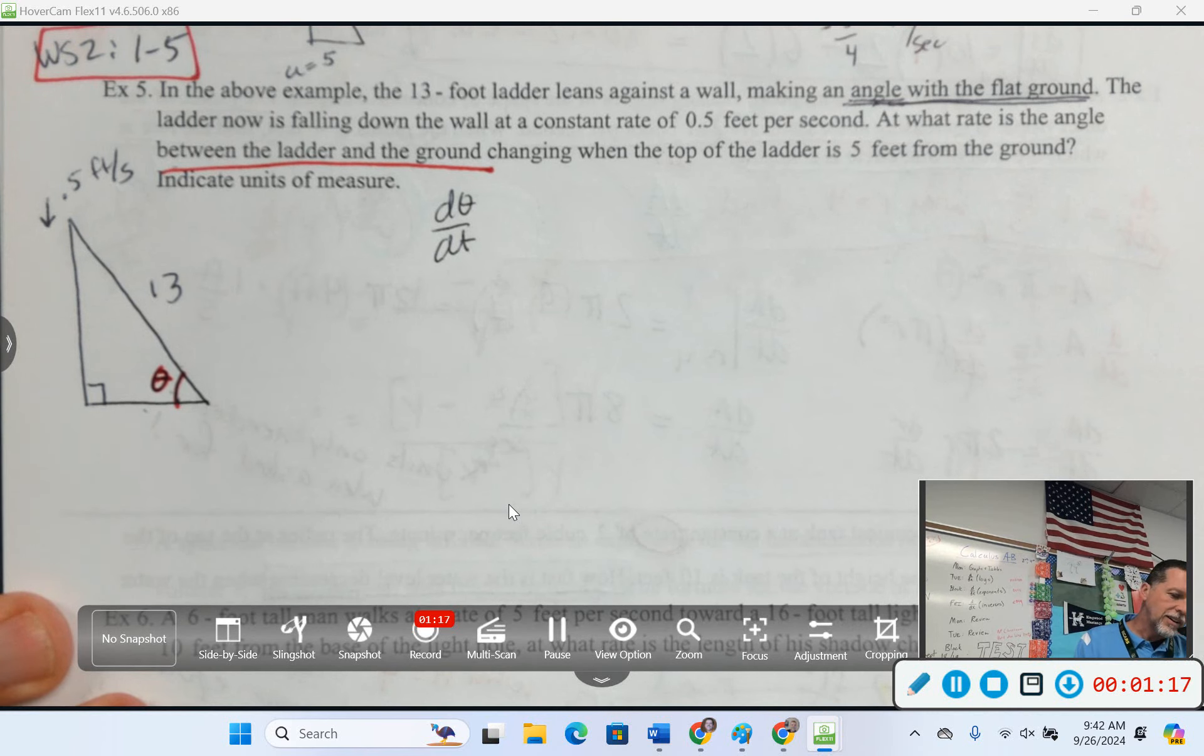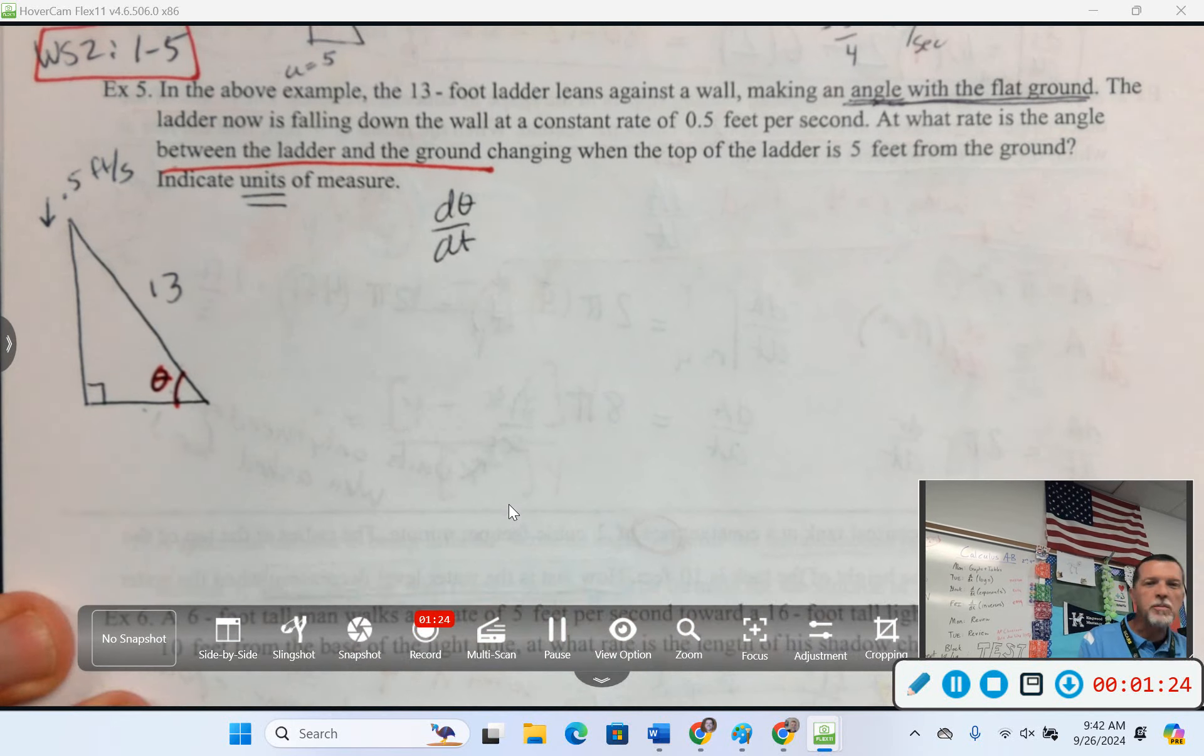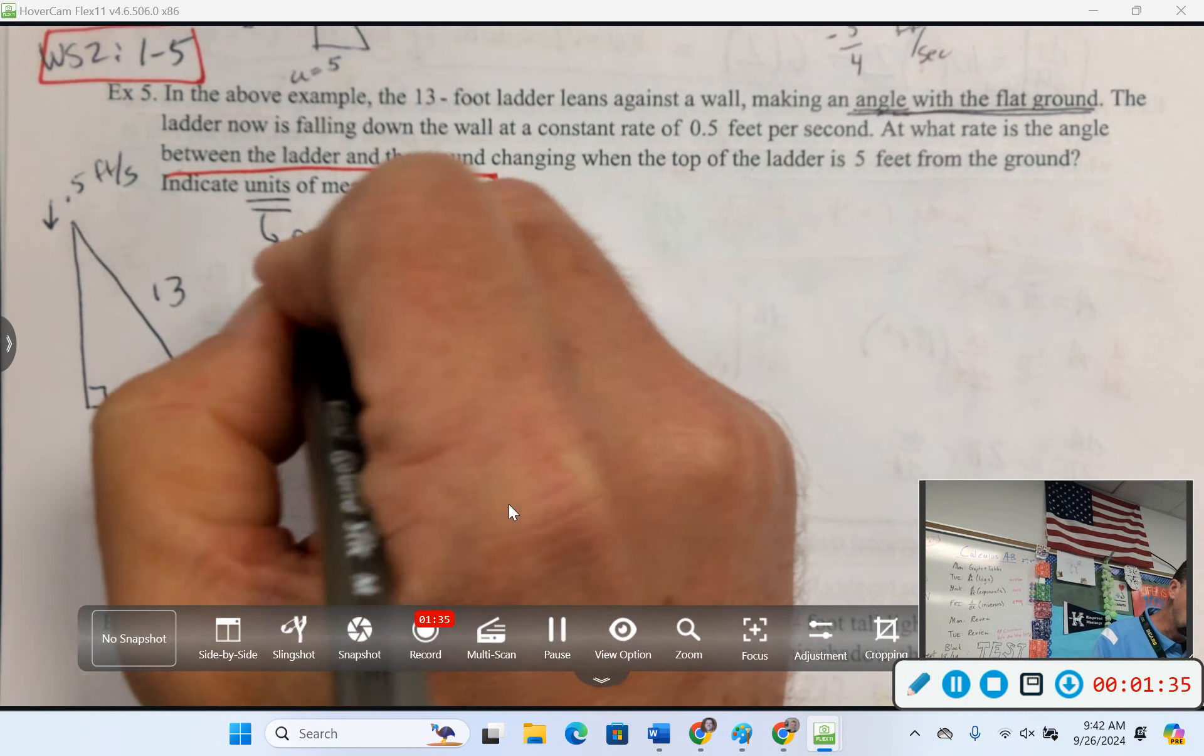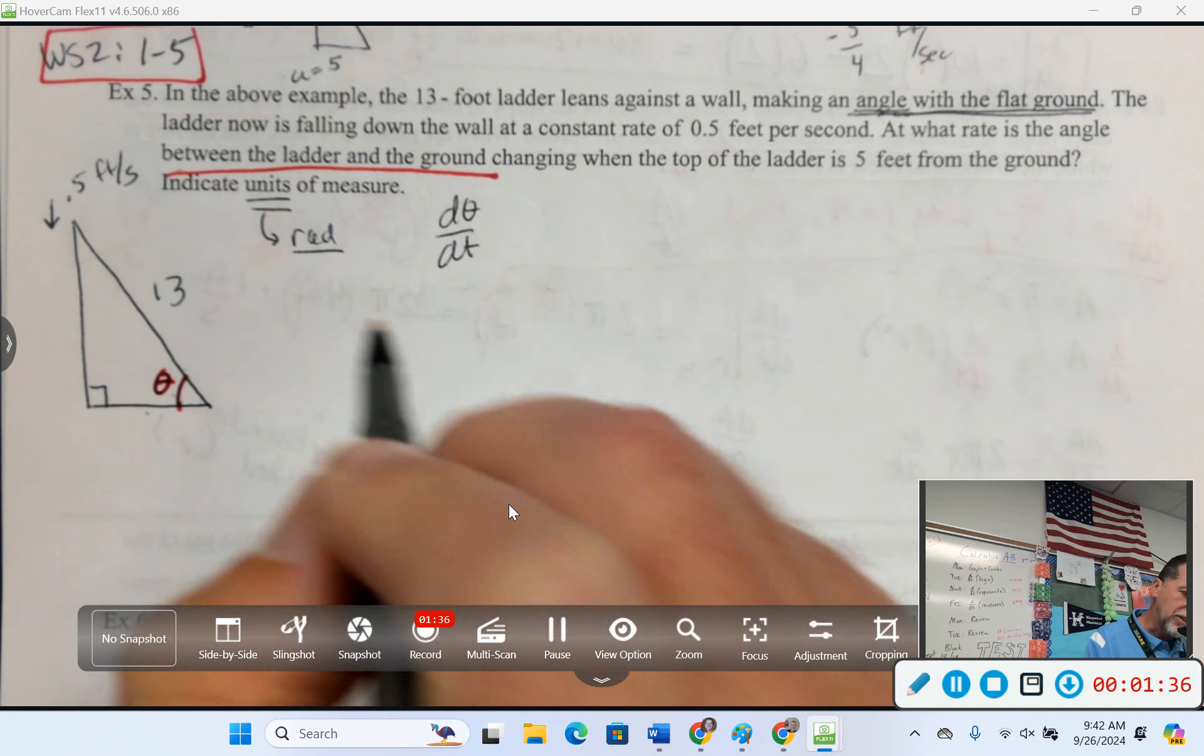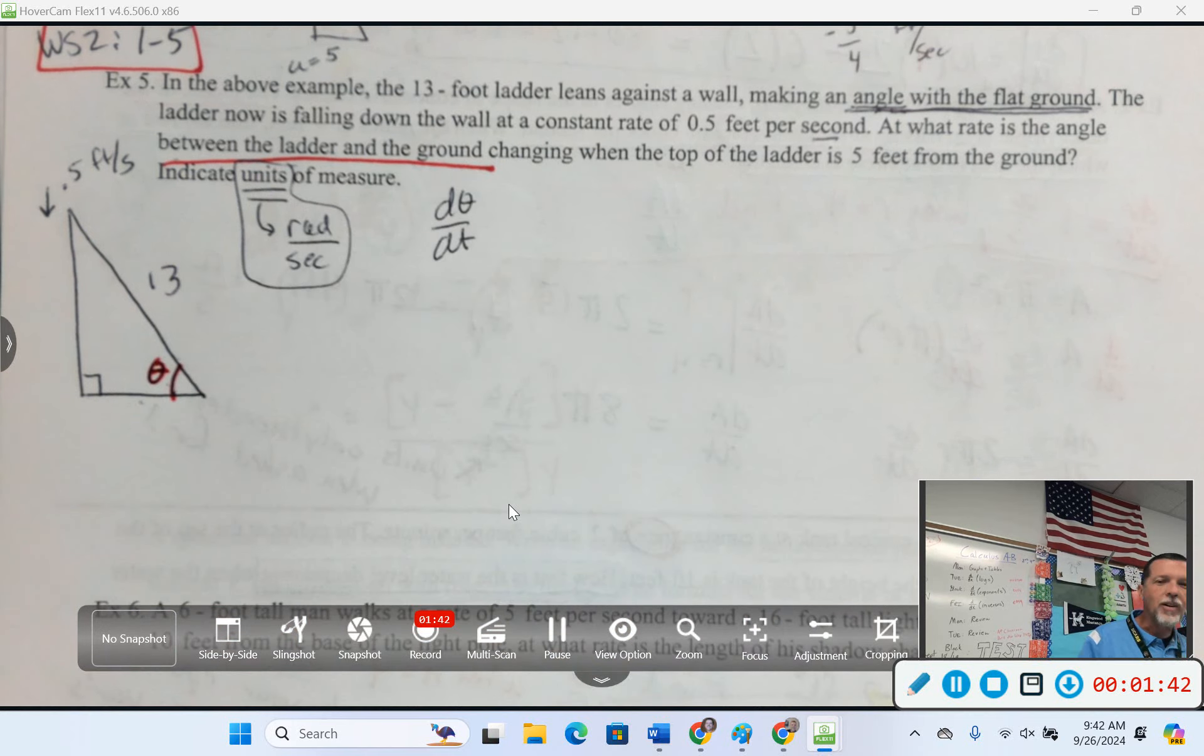When the top of the ladder is 5 feet from the ground, indicate units of measure. I could do units of measure right now. What do we measure angles in? Degrees is one option, but it's almost always radians now. So, this is going to be in radians per second. I've hardly worked any of the problem and I've got one point because I know what the units are already. Radians per second.